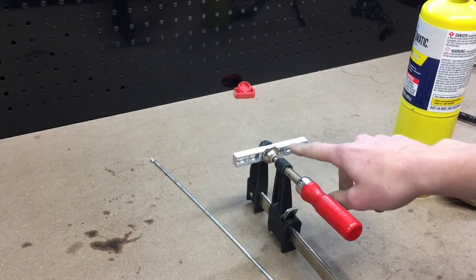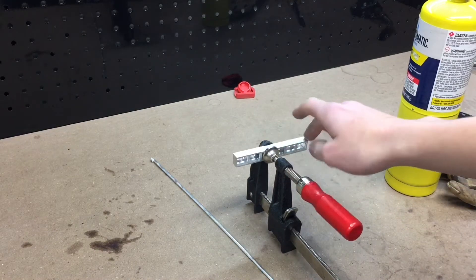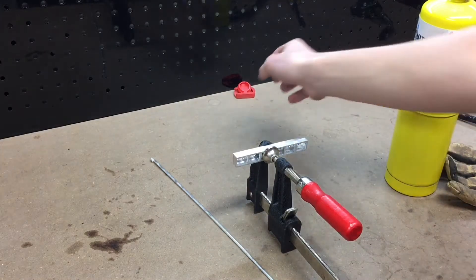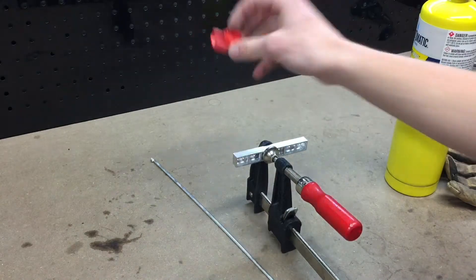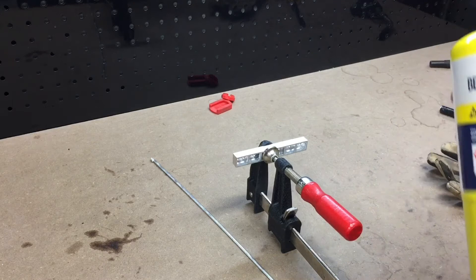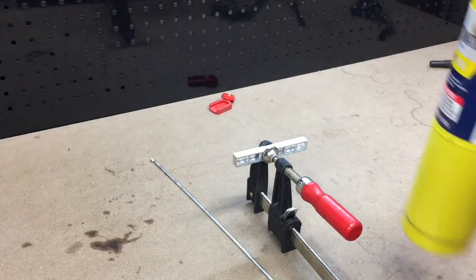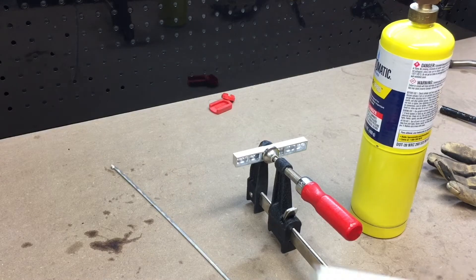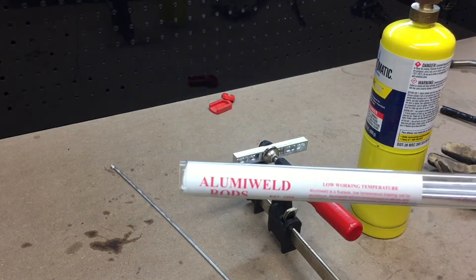I've already done some over here, but I'm going to work my way around here. I also removed the rubber or plastic pieces off this clamp so that they don't melt. This is map gas, and this rod here is an alumi-weld rod.